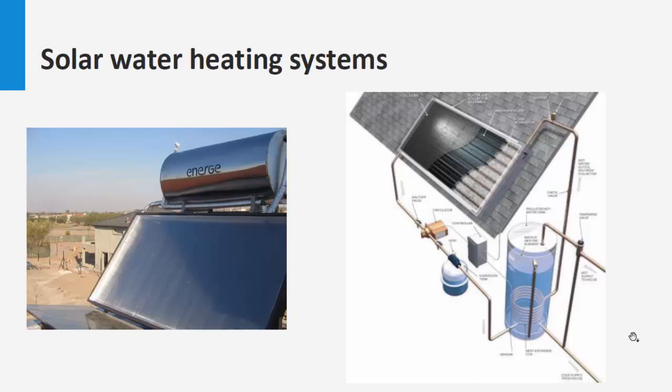The amount of hot water produced by a collector depends upon the type and size of the system, the amount of sunshine available at the site, and the seasonal hot water demand pattern. There are several ways to classify solar water heating systems.